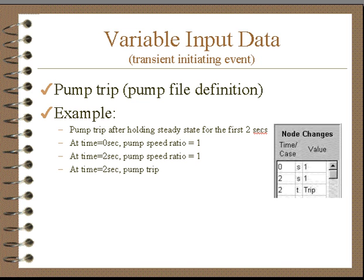If you have a pump file, you can actually designate either speed or a trip. A trip allows us to calculate the rundown. This illustrates a pump trip where at time zero to two the steady state conditions are held, and then at time two the pump trips. The selection we make here is the pump trip.